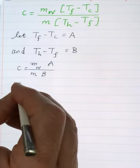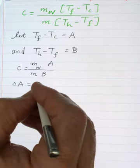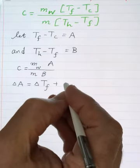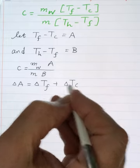So the error of A is equal to the error of T_final plus the error of T_cold.